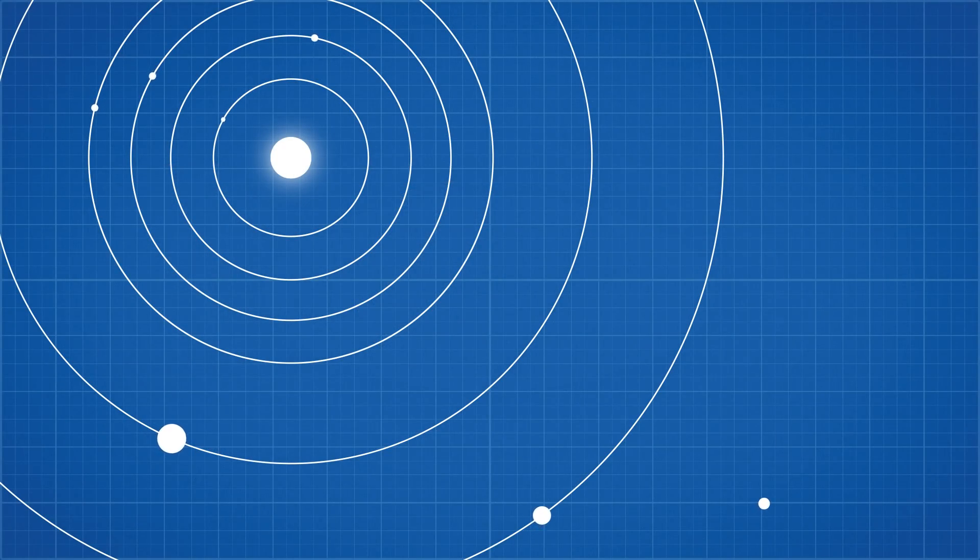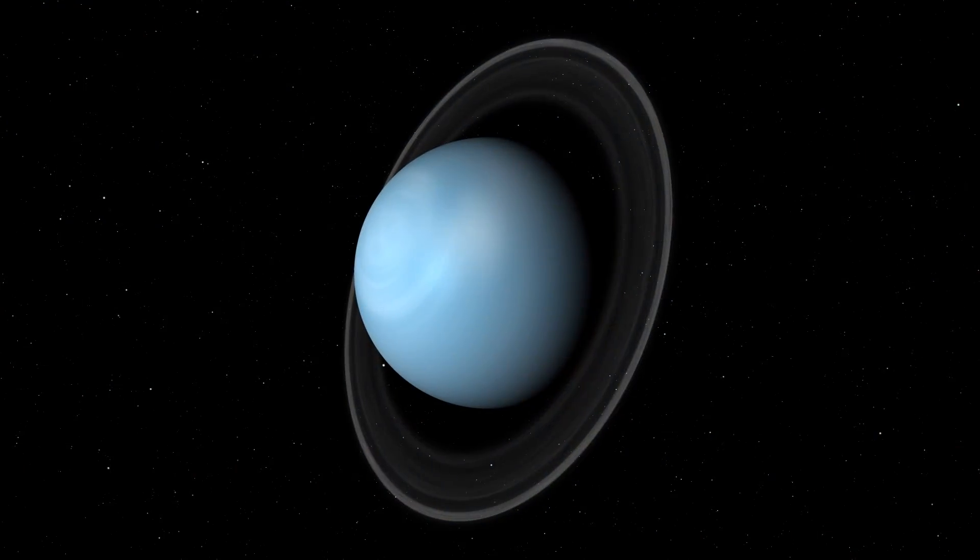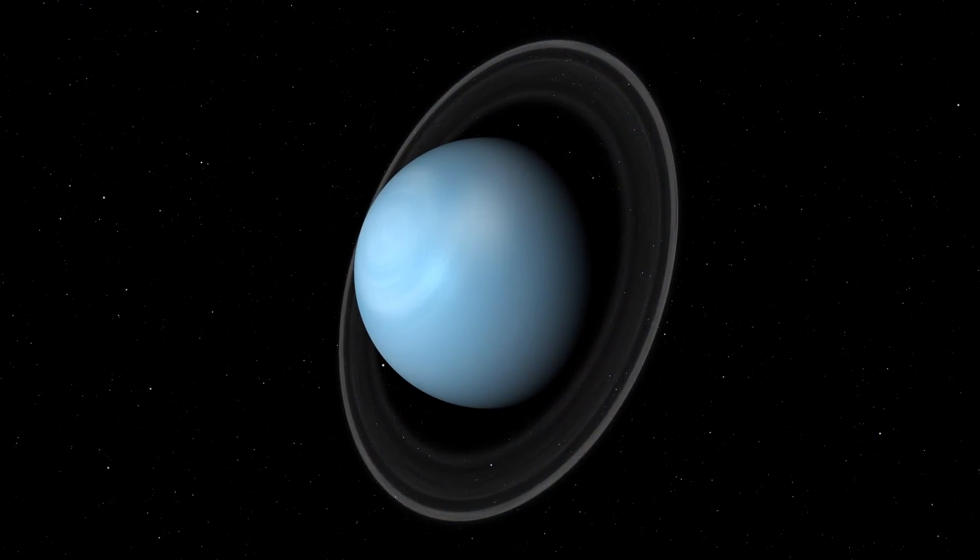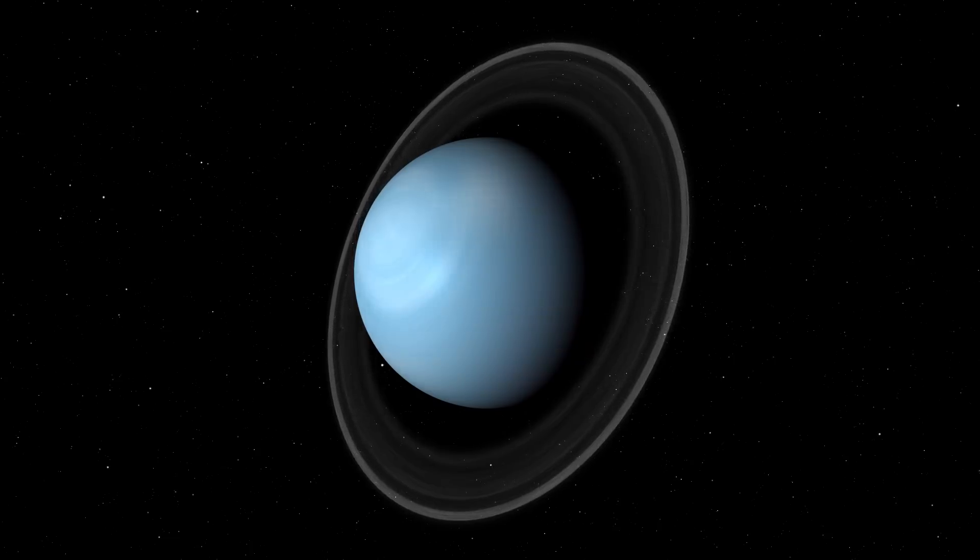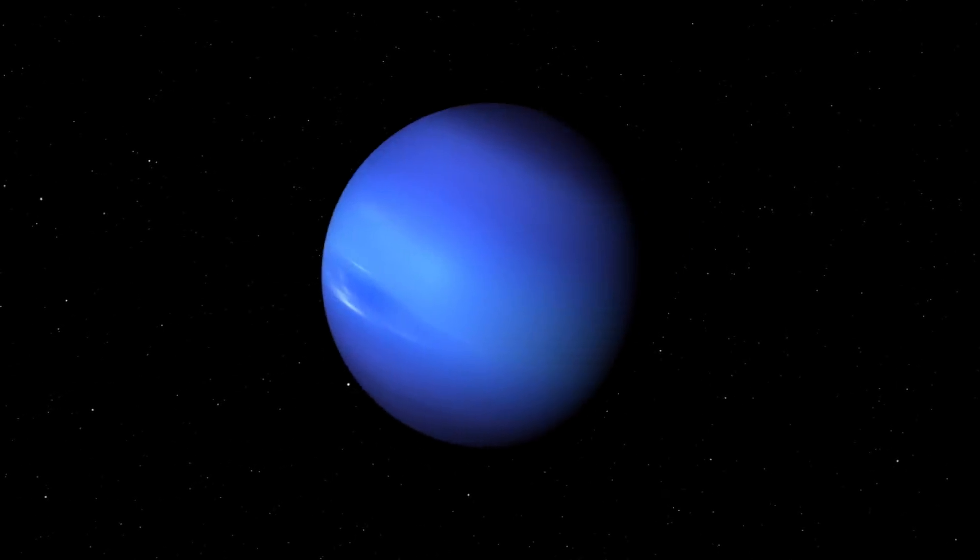Uranus and Neptune had been observed numerous times through telescopes, but astronomers continuously mistook them for stationary stars or comets. It was only when astronomers noticed the circular orbit of Uranus that it was accepted as a planet. Then, as its orbit was further examined, astronomers noticed deviations that could only be caused by a nearby planet, and thus Neptune, our solar system's final planet, was discovered.